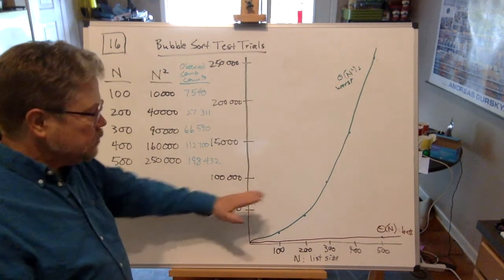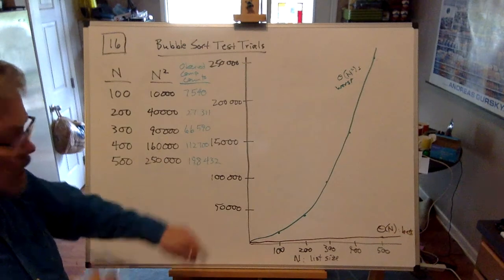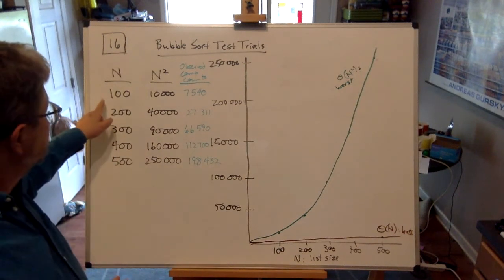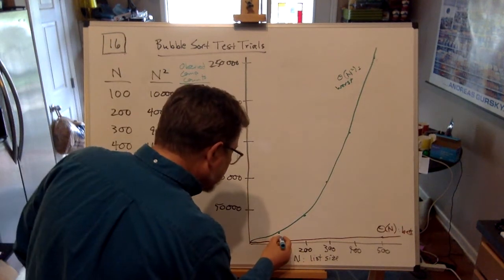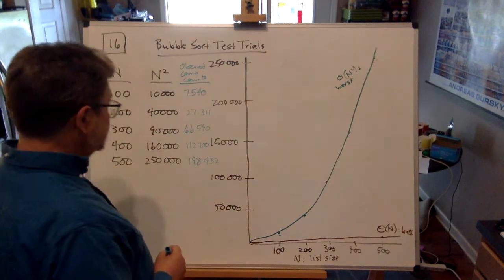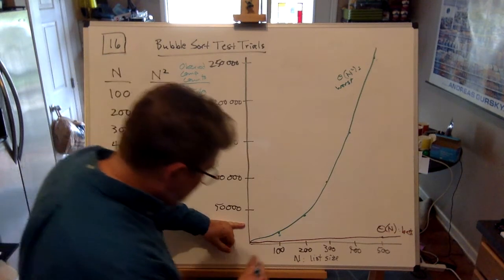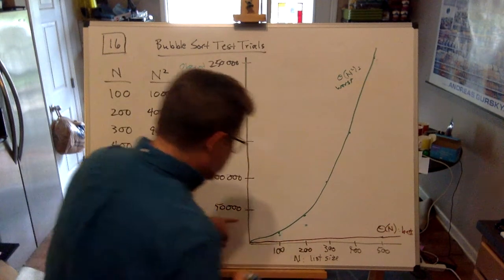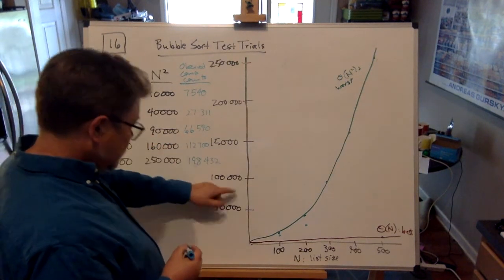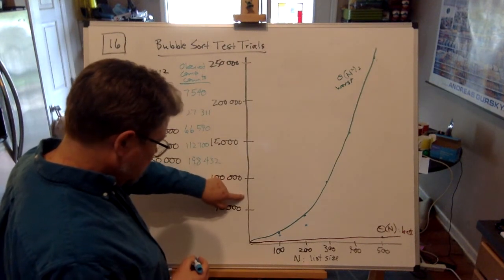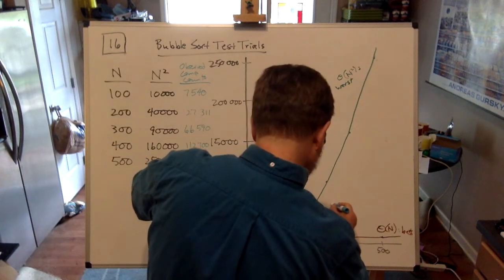Here's what I mean: go over 100 and up 7,540, which would be about right there. Over 200 and up 27,311, which is a little above halfway up there, about right there. At 300, we go up 66,590, which is not quite half this way, about right there.